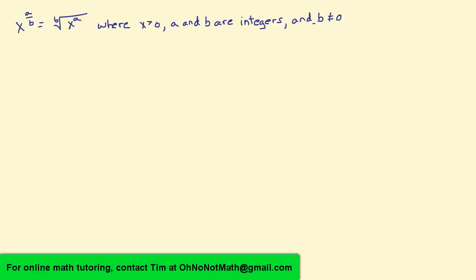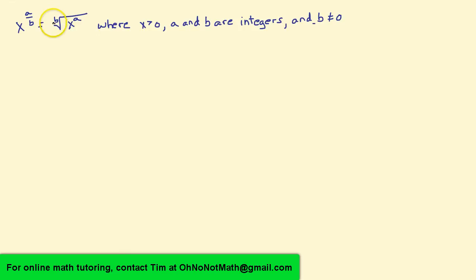In this video we're going to work some examples of converting from radical form to exponential form. To do this, you have to know that x raised to the power of a over b — that's exponential form — equals the radical expression with x raised to the power of a in the radicand and with the index being b, where x is greater than 0, a and b are integers, and b is not equal to 0. Let's do some examples.